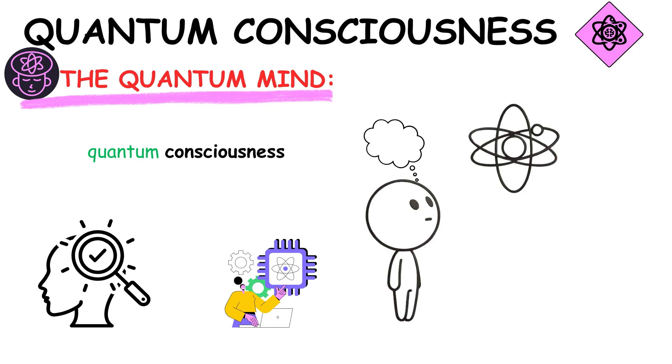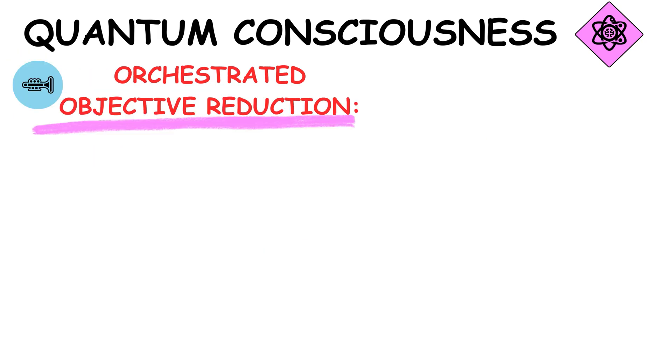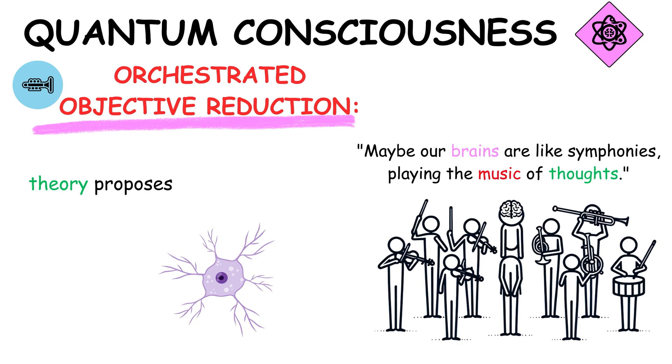Orchestrated objective reduction delves deeper. This theory proposes that consciousness arises from quantum processes within the brain's neurons. It's a controversial but fascinating idea, suggesting a bridge between the physical brain and the subjective mind.